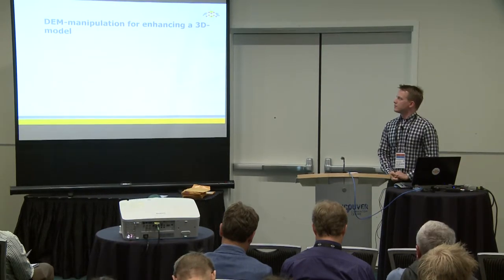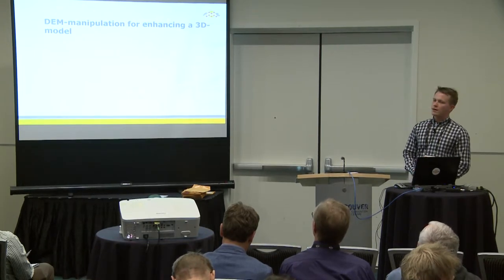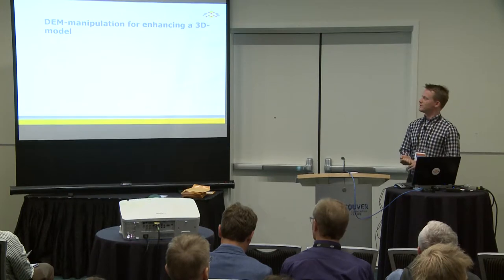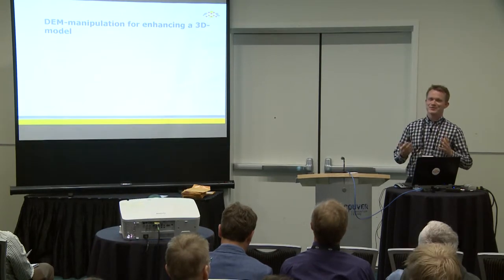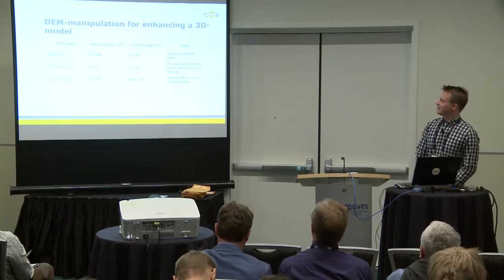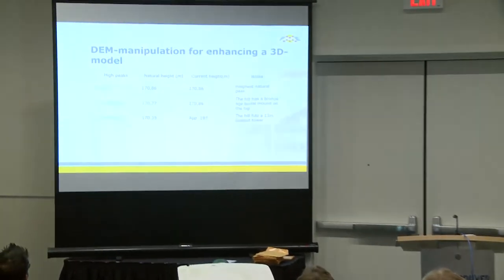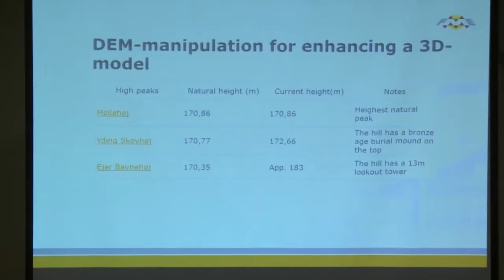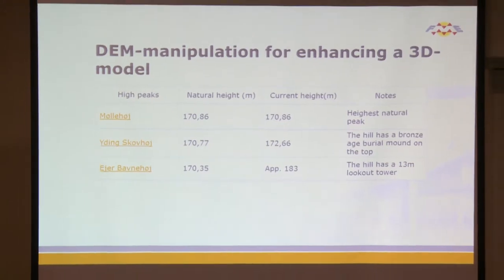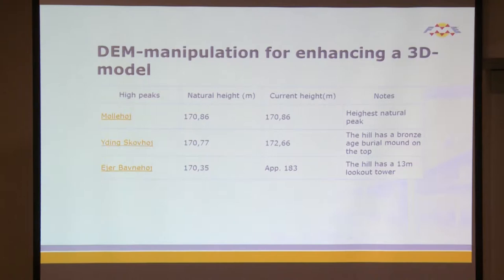For our DEM manipulation to enhance our 3D model — Denmark is very flat; our highest peak is 170 meters. So you might wonder why we need DEM manipulation. I found this fun little table showing the three highest peaks in Denmark — they are all around 170 meters. Møllehøy was the highest peak when I was a child, but it's only the highest if you include the 30-meter lookout tower. And Yding Skovhøj in the middle has a Bronze Age burial mound that makes it the highest peak if you count that.